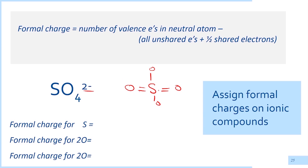Let's distribute the lone pairs on each oxygen. We have six valence electrons on each oxygen, so with two electrons already in the bond, we write the rest as lone pairs: one, two, three, four — giving one lone pair at the top and one lone pair at the bottom. The other singly bonded oxygen is similar, so we have another two lone pairs.